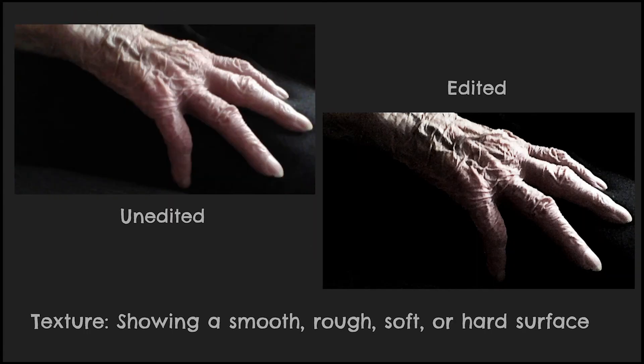Something that I've always liked to focus on in my photographs is texture. Texture is when you're showing a smooth, rough, soft, or hard surface. As you can see here, this is more of a rough surface. This is my grandma's hands — my grandma is 95 years old. I've always had a fascination with wrinkles and how the skin changes as we age. To me, it's beautiful and different and odd, and we all know that's very much my style.